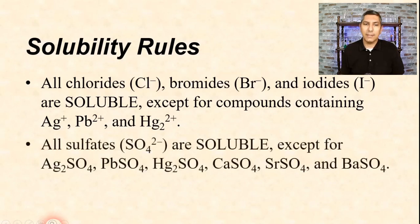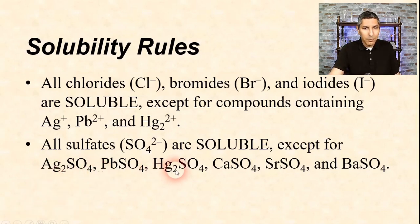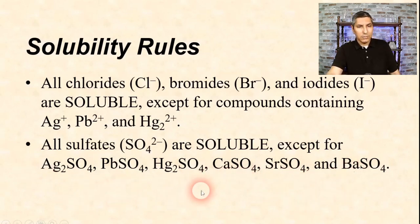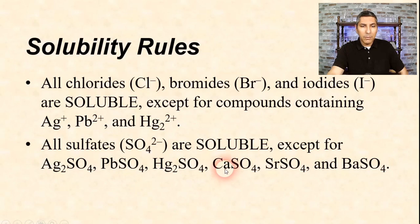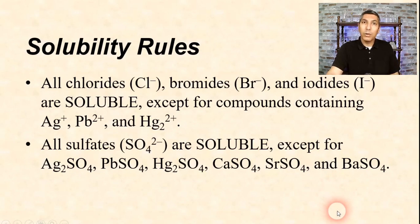Sulfates are generally soluble, so if you see a compound ending with SO4, it's probably going to dissolve in water. But there are six exceptions. Silver, lead, and mercury — just like before — but we also have calcium, strontium, and barium. Notice that calcium, strontium, and barium are bunched right next to each other in group 2 on the periodic table. So those six sulfates are insoluble; all other sulfates will dissolve in water.